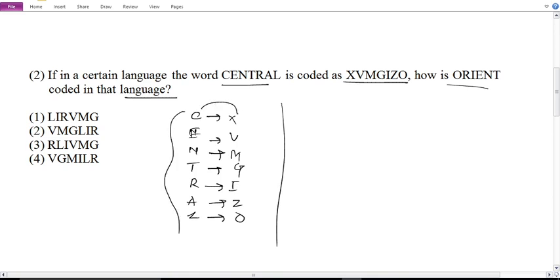Now, let's see, C and X are alpha pairs. So, E, V, N, M, T, G, R, I, A, Z. And then, after, L and O, all these are alpha pairs.